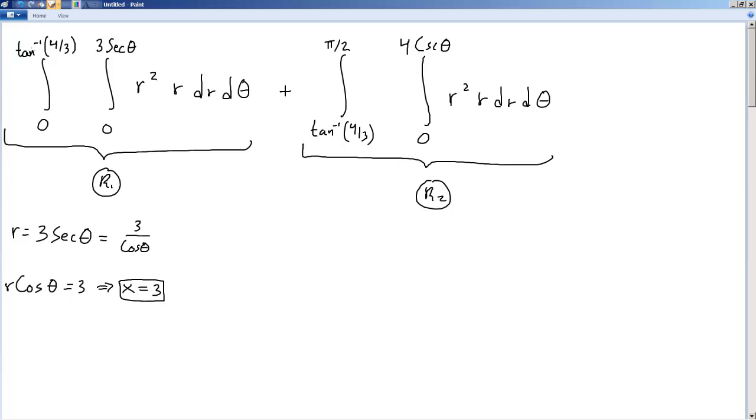Now, what about this tan inverse of 4 thirds? We've got the arctangent, tangent inverse of 4 over 3. This is saying that tangent of some theta is equal to 4 over 3. So let's draw ourselves a right triangle. There it is. Call that theta.